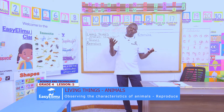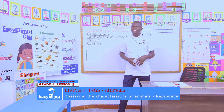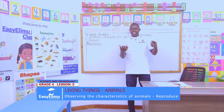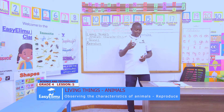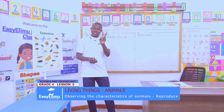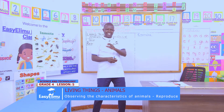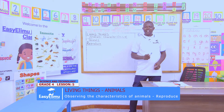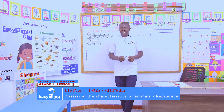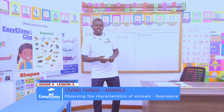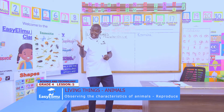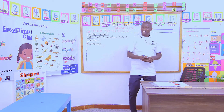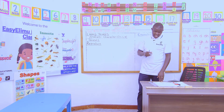Yesterday we learned the characteristics of living beings. We said animals: they grow, they die, they feed, amongst many. And now today I want us to recall two animals we mentioned yesterday. John has said we mentioned a dog, and Esther said a cow. Yes, these are some of the animals we mentioned yesterday.